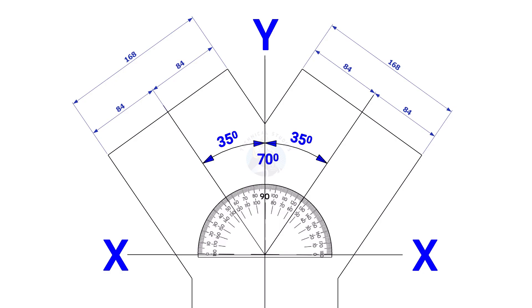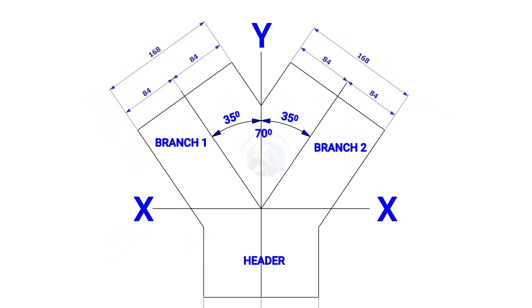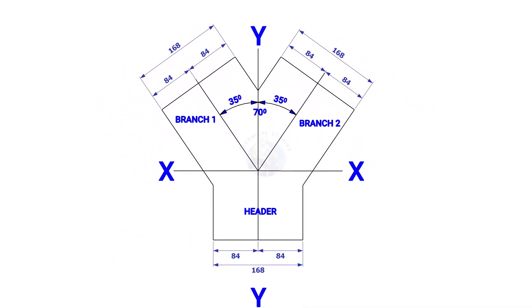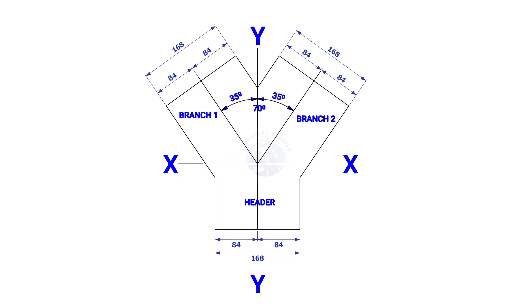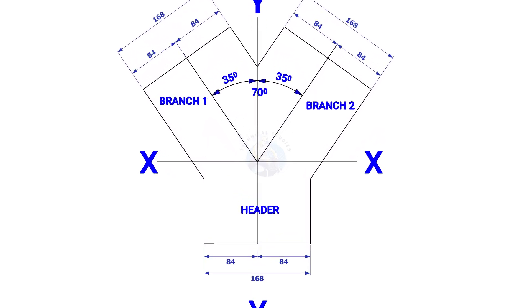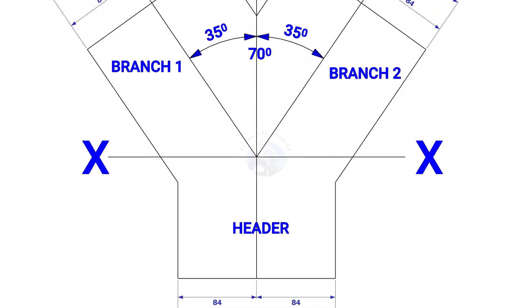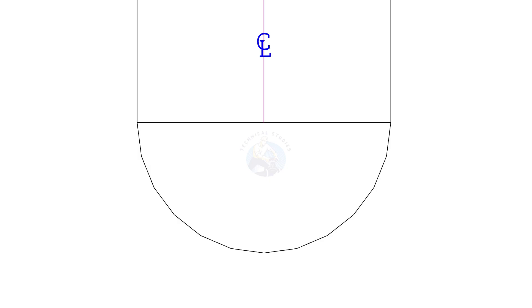Draw the branches also, as shown. Draw lines connecting the branch and header meeting point to the center, as shown. Draw a half circle below the header; the radius shall be half the diameter of the header.